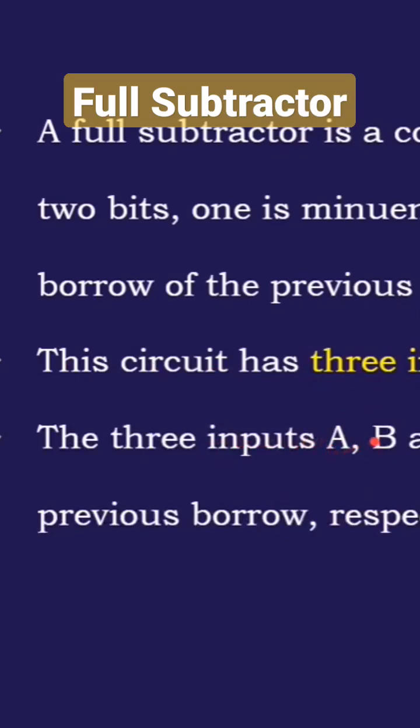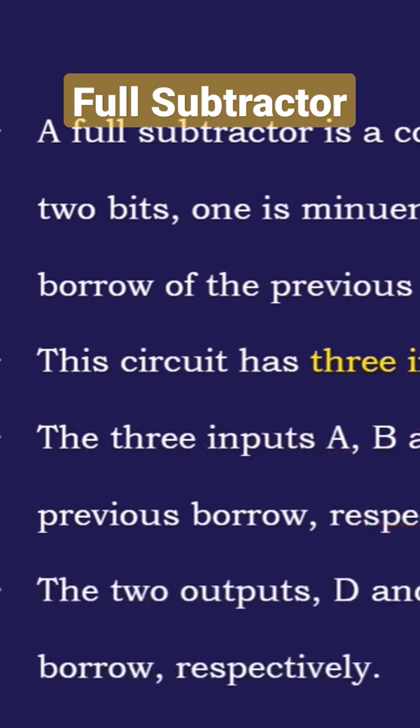The three inputs are A, B, and Borrow In (Bin), which denote the minuend, subtrahend, and the previous borrow respectively. The two outputs are the difference and the borrow.